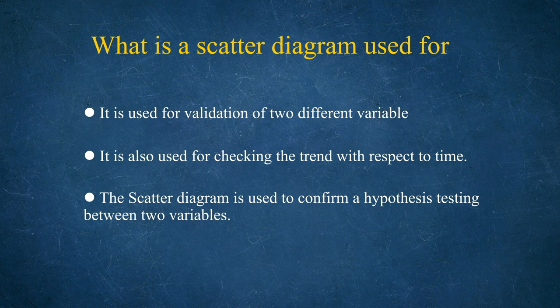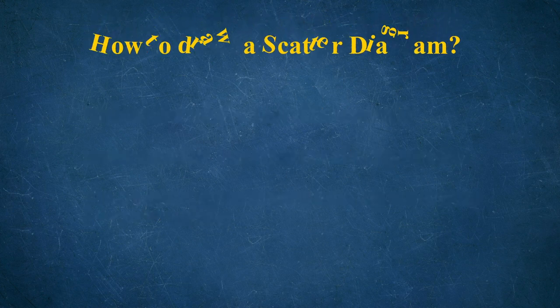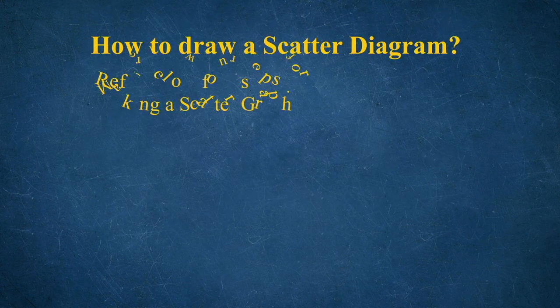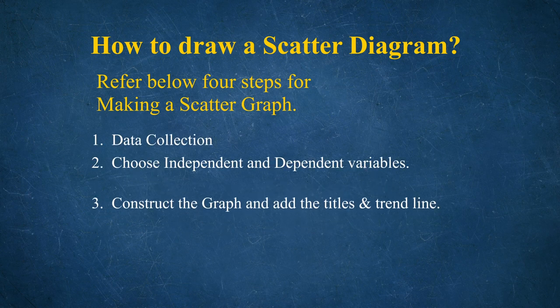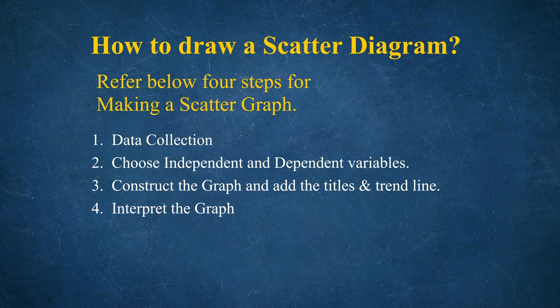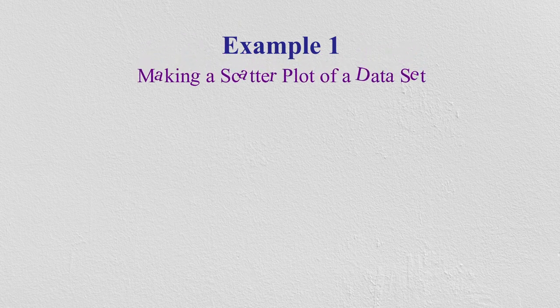When plotting a scatter diagram, we follow four steps: data collection; choosing independent and dependent variables; constructing the graph and adding titles and a trend line; and then interpreting the graph. The scatter diagram is self-explanatory and gives a clear view of the trend — whether negative, no relationship, or positive.